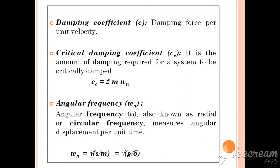The damping coefficient at the critical speed condition is called the critical damping coefficient. Cc is equal to 2m·ωn, where ωn is the angular frequency — the measure of angular displacement per unit time. It is otherwise known as radial frequency or circular frequency.